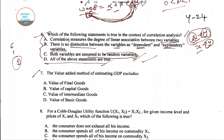Now we come to the last question of this video, question number seven: the value added method of estimating GDP excludes which of the following? Four options are given: value of final goods, value of capital goods, value of intermediate goods, and value of basic goods.